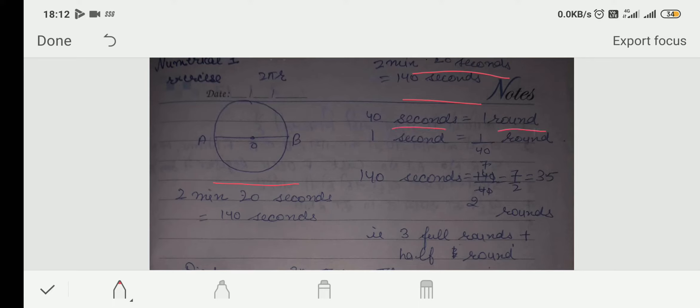In 40 seconds, 1 round. 1 second, 1 by 40 round. In 140 second, 3.5 rounds. 3.5 rounds means 3 full rounds and half rounds.